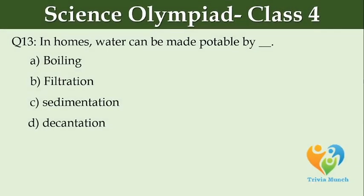In homes, water can be made potable by dash. Option A: Boiling. Option B: Filtration. Option C: Sedimentation. Option D: Decantation.